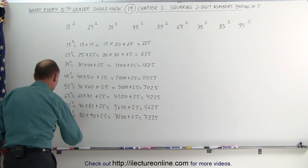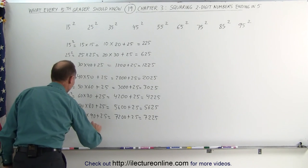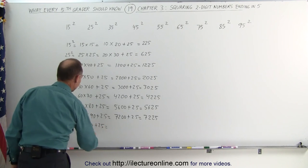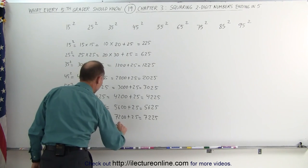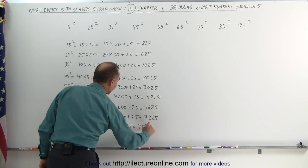And finally, let's try 95 squared. 95 squared, that's the same as 90 times 100, plus 25. 90 times 100 is 9,000, plus 25 is 9025.